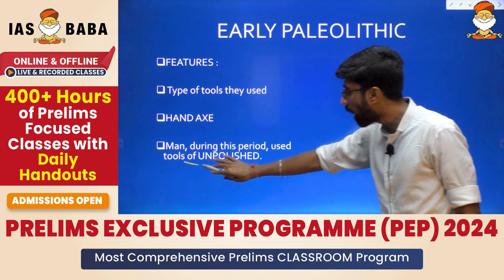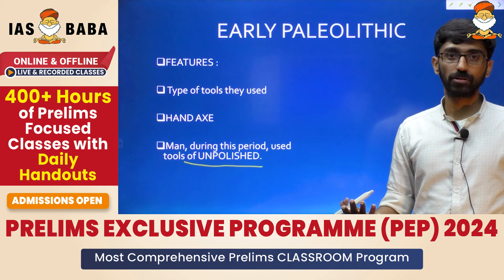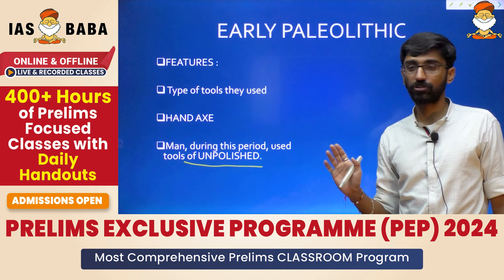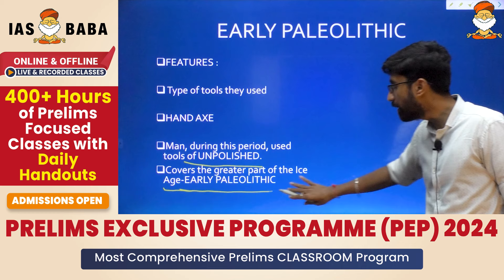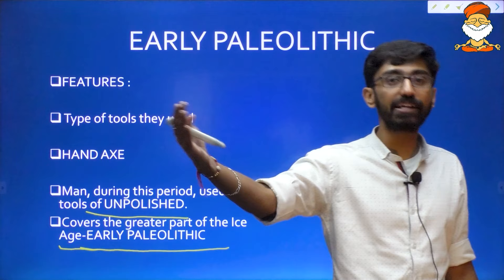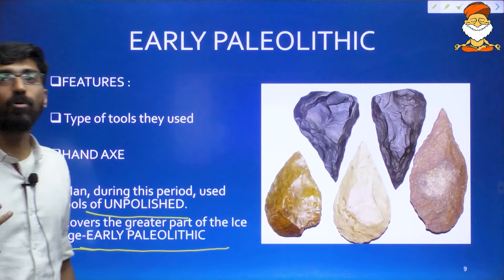The Early Paleolithic age covers most of the Ice Age — from roughly 2 million years ago until about 39,000 BCE. The stone tools are unpolished, meaning they have rough edges. When we compare to Neolithic stones, you can see the difference. These Early Paleolithic stone tools are quite rough — that is what is called unpolished — but they also have sharp edges that make them effective.